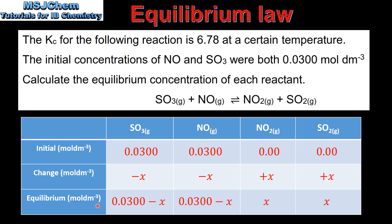Then we have the equilibrium concentrations. For SO3 and NO they are both 0.0300 minus X, and for NO2 and SO2 they are both X.